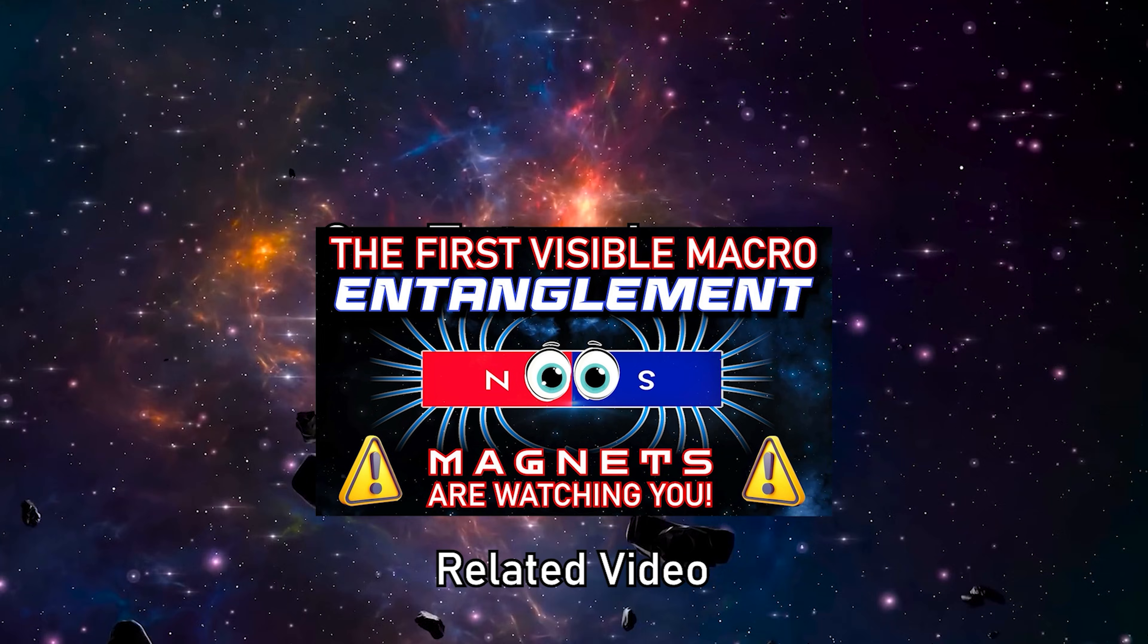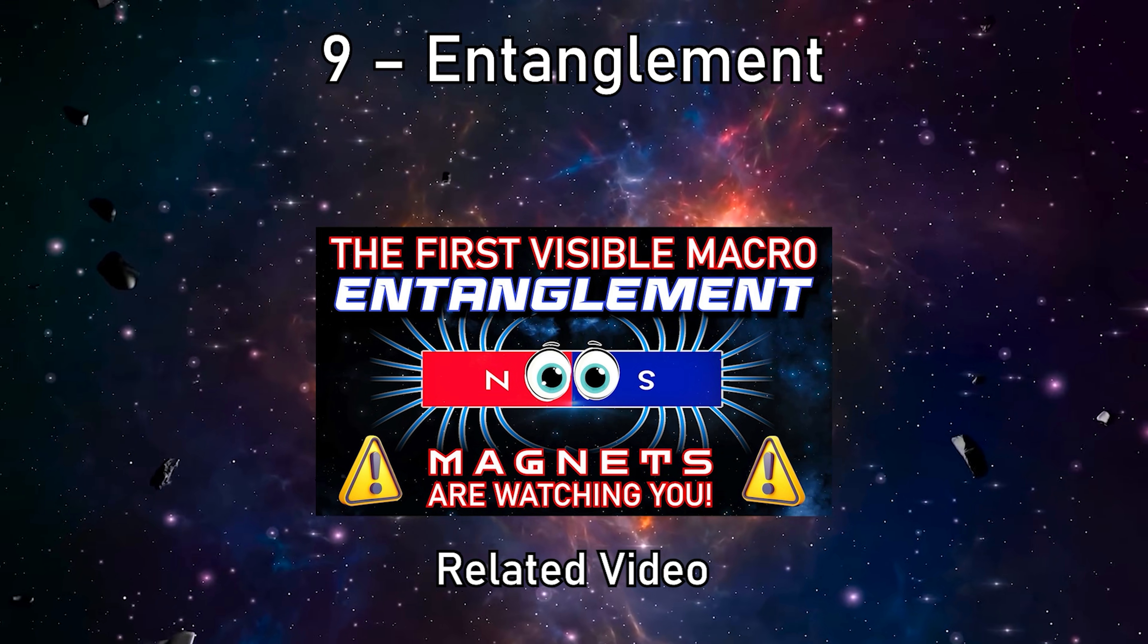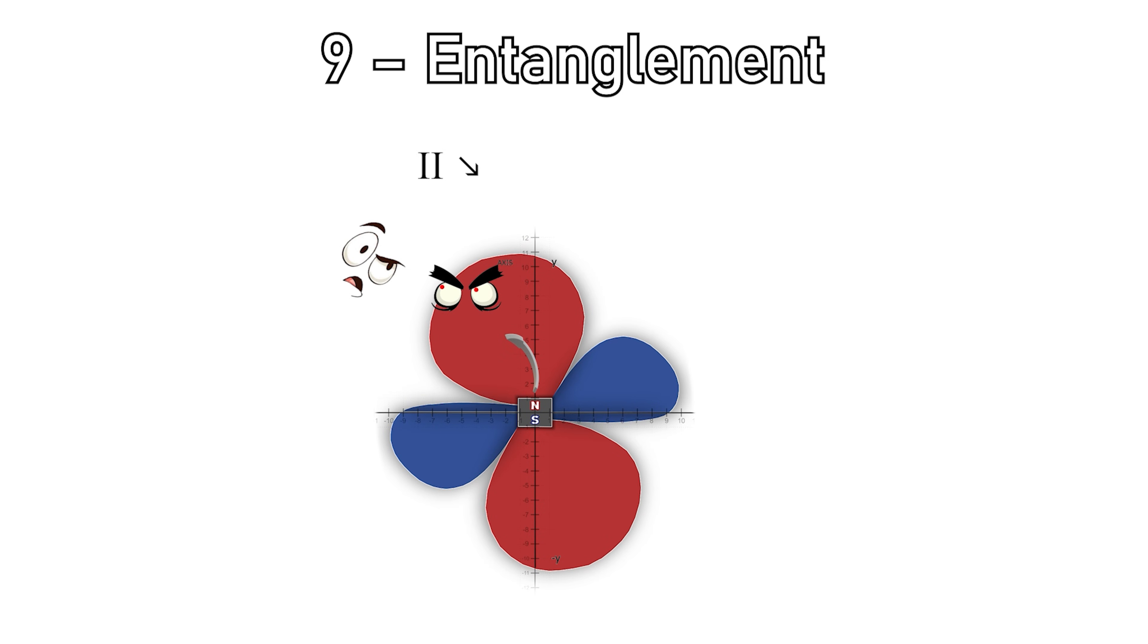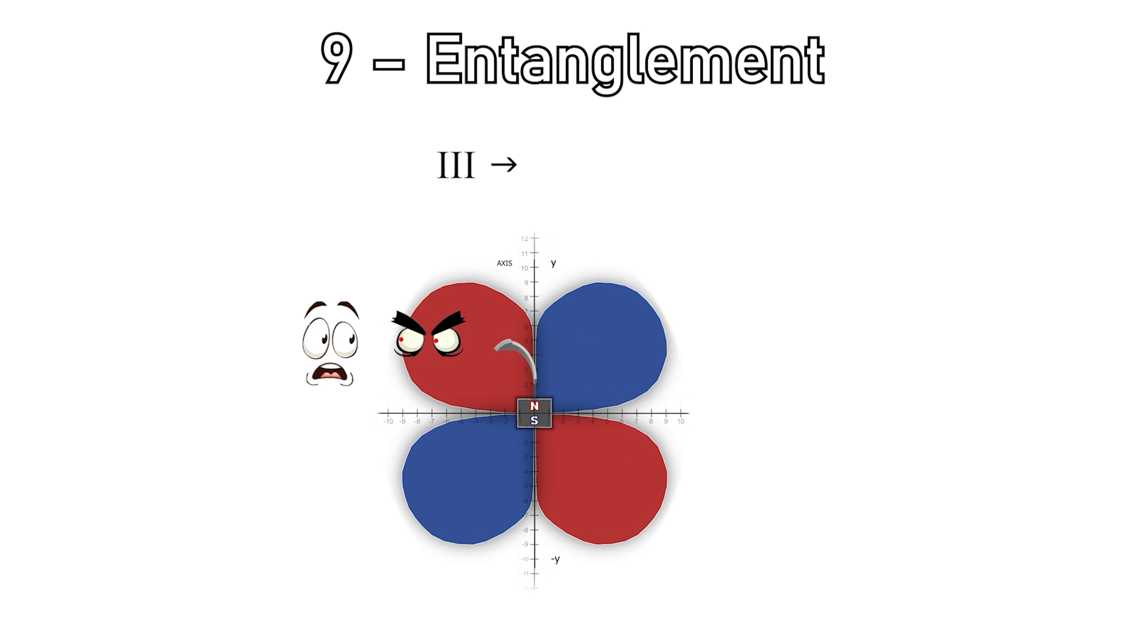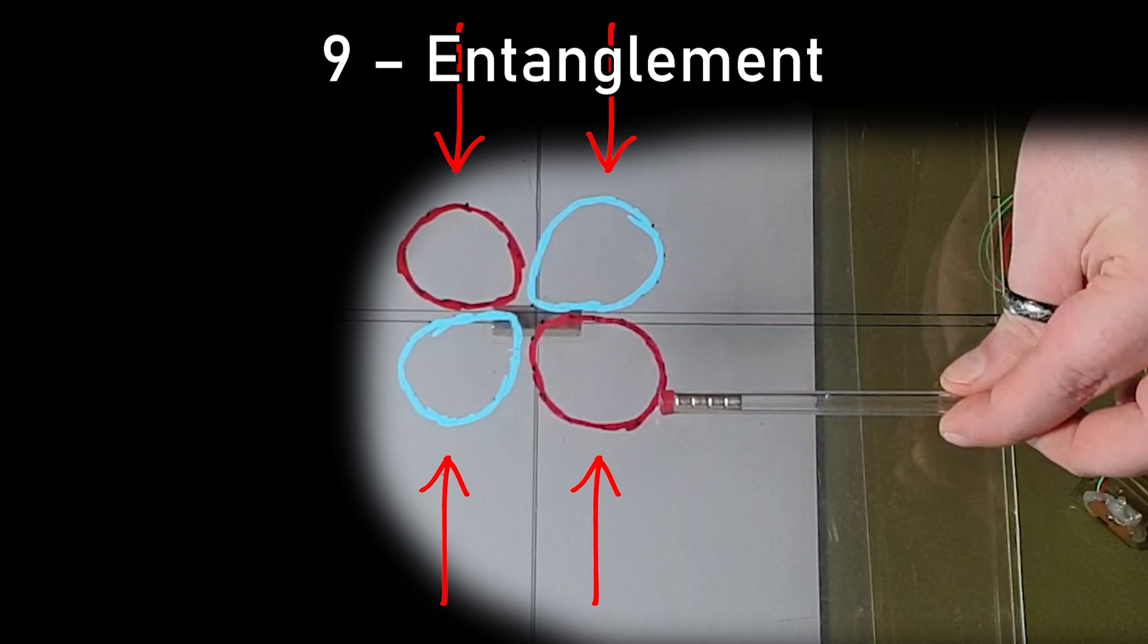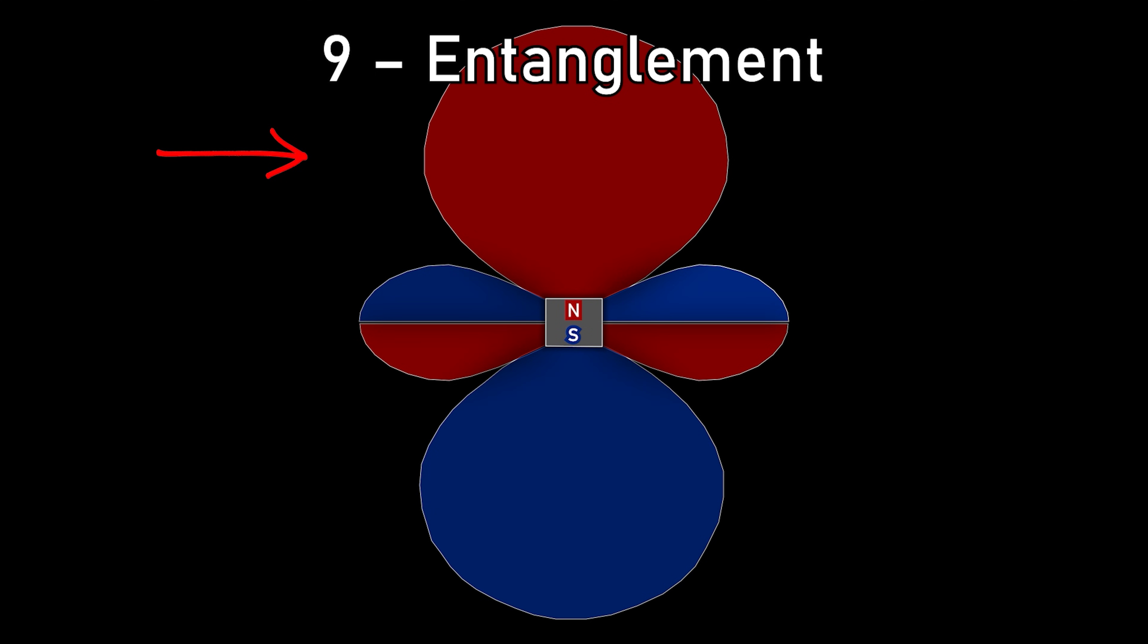9. Entanglement. Quantum entanglement can be compared in three ways. As a relationship between observer and field, because the result depends on the measurement system. As geometric entanglement, because the shapes emerge only as a global structure. And as polarity or macrospin entanglement, where distant states turn out to be correlated.